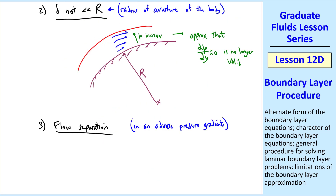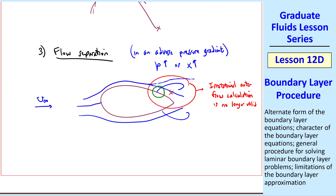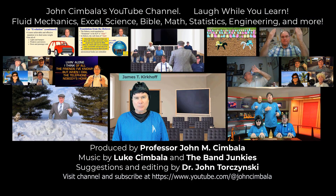Third limitation is flow separation, which typically occurs in an adverse pressure gradient where pressure increases downstream in x. If flow separation occurs, the outer irrotational flow we predicted is no longer valid, and the flow deviates to account for the separation region. Beyond the separation point there will be reverse flow near the wall, and because the boundary layer equations are parabolic, they cannot handle flow going in the opposite direction — the boundary layer equations break down. Fourth, when the Reynolds number is too high (typically greater than about 10⁶), the boundary layer becomes turbulent, and we're dealing here only with laminar flows. Thank you for watching.